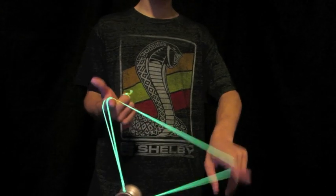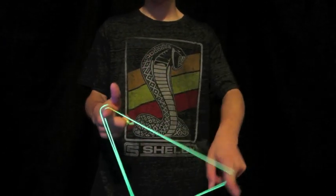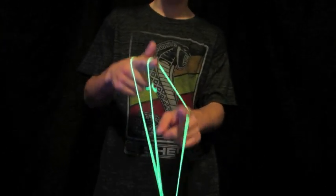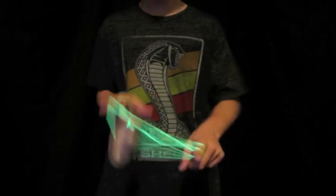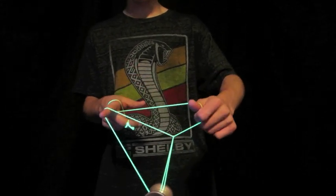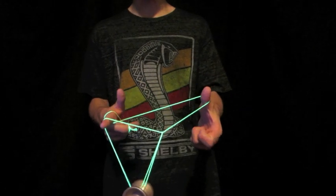You want to roll the yo-yo over this hand right here and behind this string, so like that. Then you want to reposition your index finger so that it's pointing away from you like this, into this loop. You're going to roll the yo-yo onto this string, so like that.